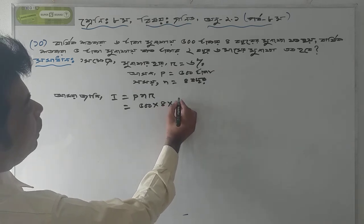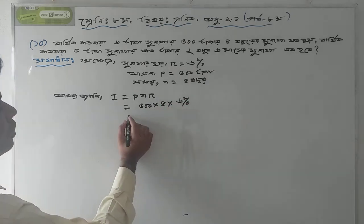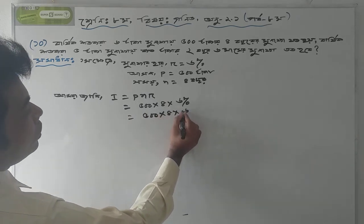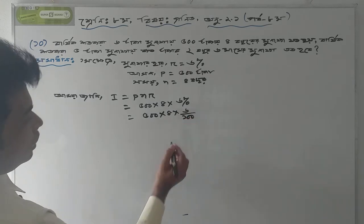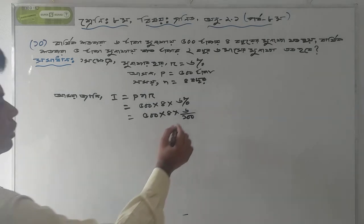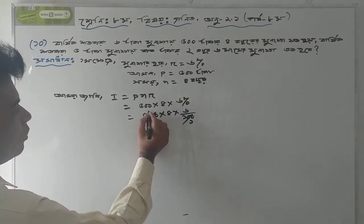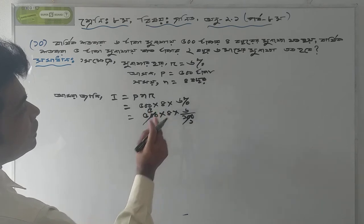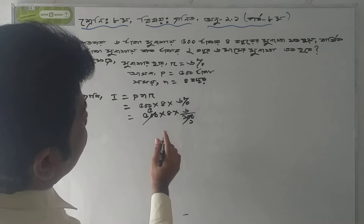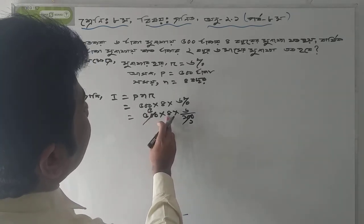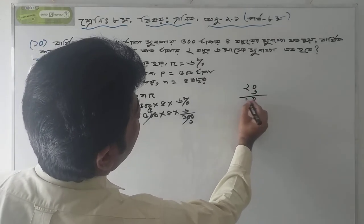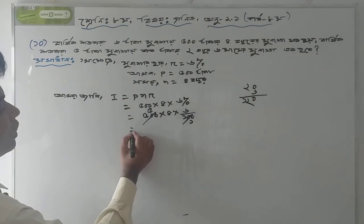100, 100. 20. 25. This is 5. 4. 4. 5. 4. 5. 6. 120. So we have to write this: 120.